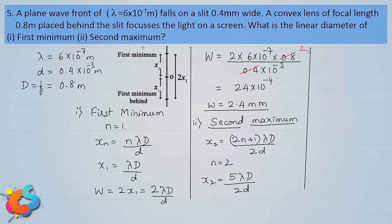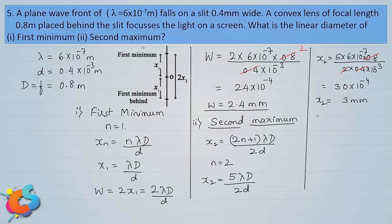Substituting the values: 5 × 6×10⁻⁷ × 0.8 divided by 2 × 0.4×10⁻³. Cancelling 0.8 in numerator with 0.8 in denominator, we get 30×10⁻⁴ meter, which is 3 millimeter. That is the distance of the second maximum from the center. For the linear diameter, multiply by 2: 2×3 = 6 millimeter. So 6 millimeter is the linear diameter of the second maximum in the diffraction pattern.